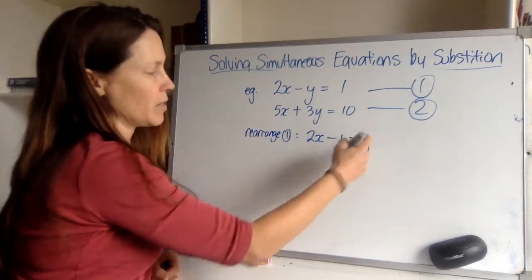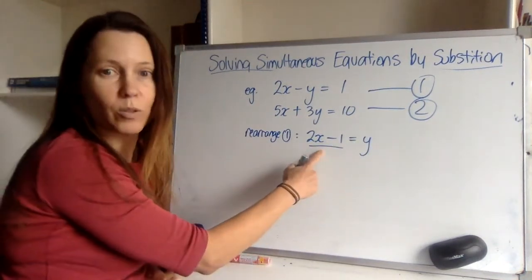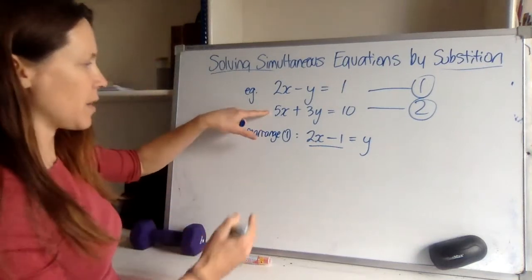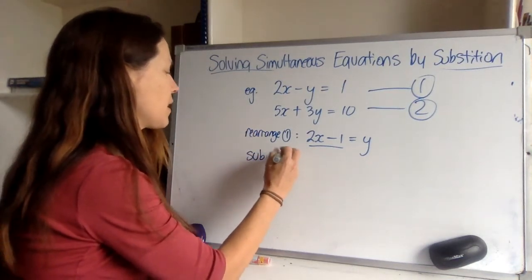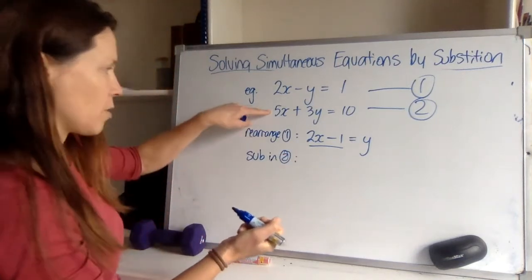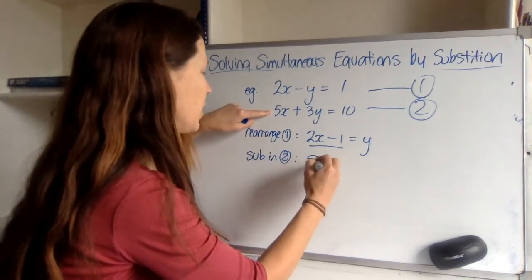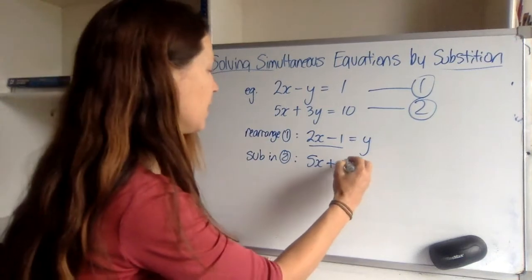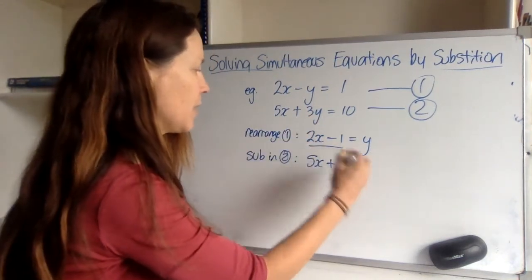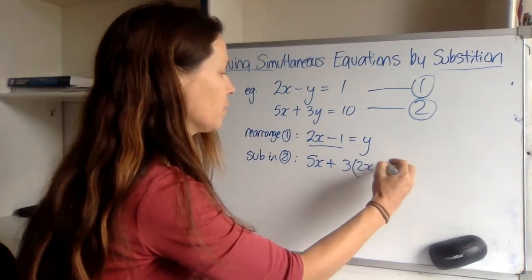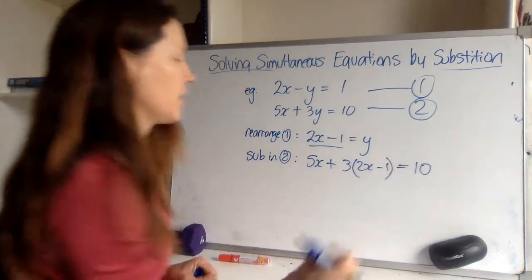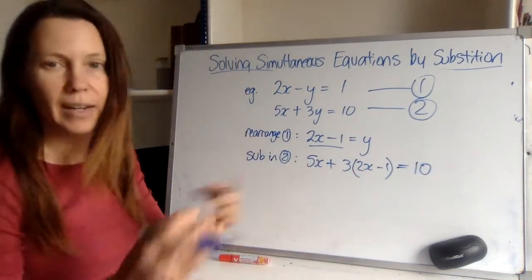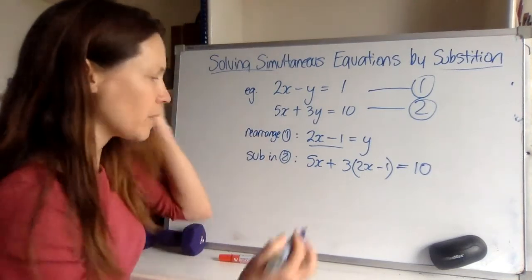Now I've got the y sitting by itself and I have an expression that's equal to y. I can now rewrite the other equation using that. So I'm going to sub that into equation 2. I'm just going to write equation 2 out, but when I get to the y part, I'm not going to write y, I'm going to write this because I know that it is equal to y. Now I've got an equation without any y's in it, it's just got x's, so I can solve that.